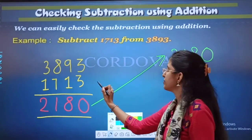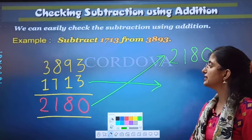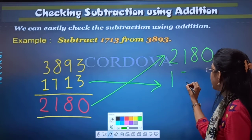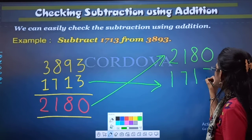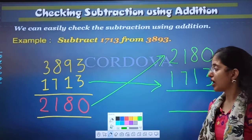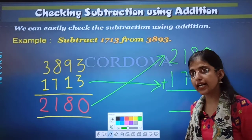Now, 1713. I will write 1713 here as it is. Now, 1713. Now, let's start our addition. Now, we will add them.